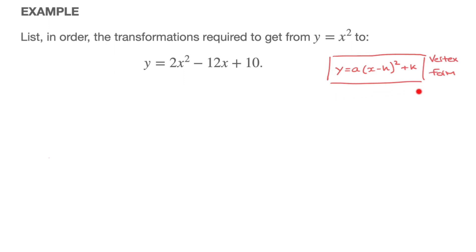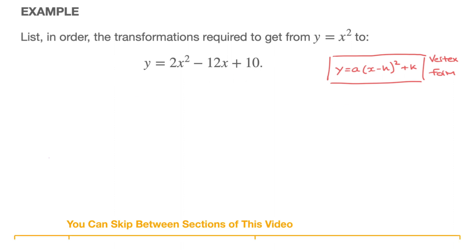With the parabola's equation written in this form, we can quickly list all the transformations. We can see that we have a vertical stretch — that's a — a horizontal translation shown by the (x minus h) in parentheses, and a vertical translation at the end with this plus k. During the first half of this video, I'm going to show you how to write this parabola in this form. If you already know how to do that, you may want to skip ahead.